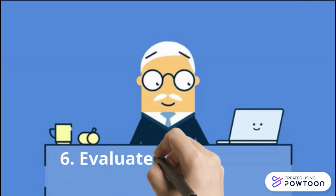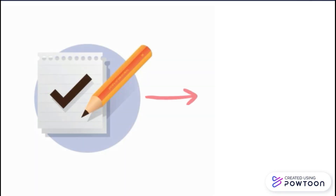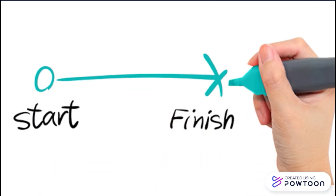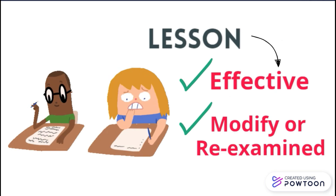The last step of the ASSURE method is to Evaluate and Revise student performance. The evaluation should be matched to the objective. You must evaluate the entire instruction process from start to finish using the objectives you created in the beginning. It is helpful to reflect on your objectives, the instructional strategy, the instructional materials, and the assessment. By evaluating the learners against the objectives, it can be determined if the lesson was effective and whether any step needs to be modified or re-examined.